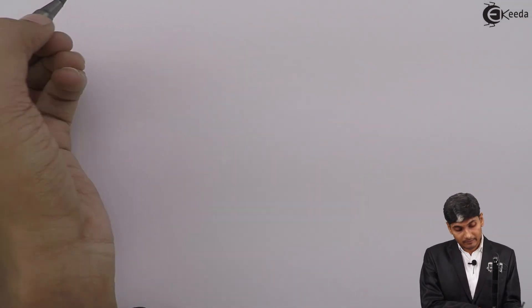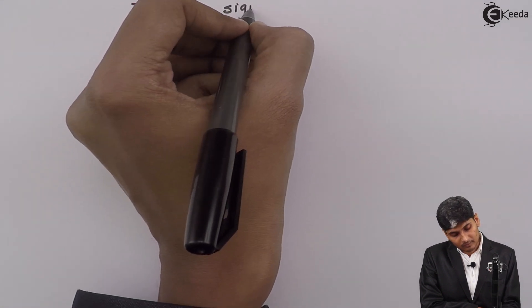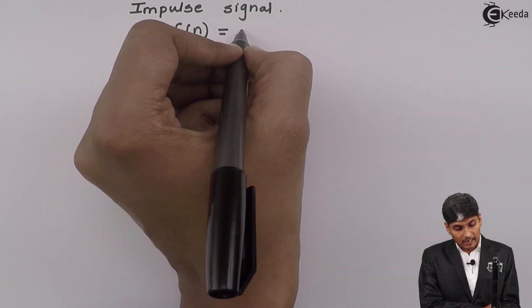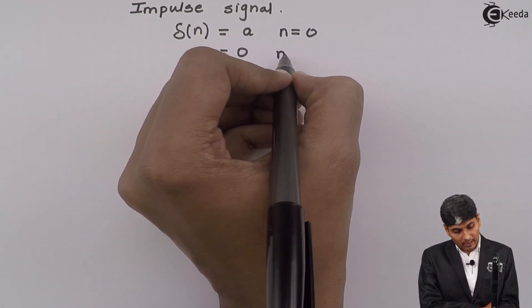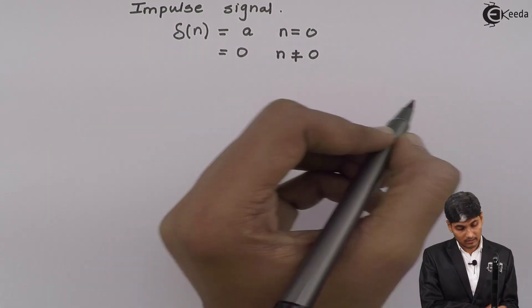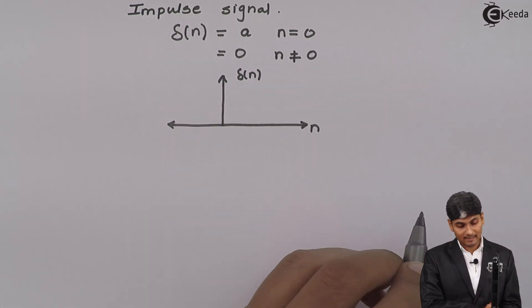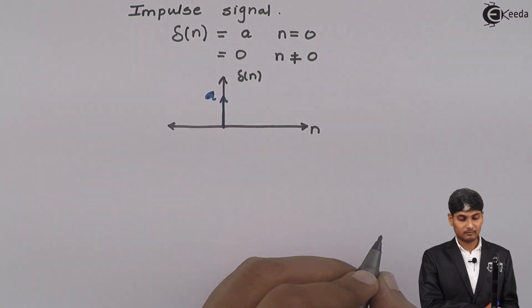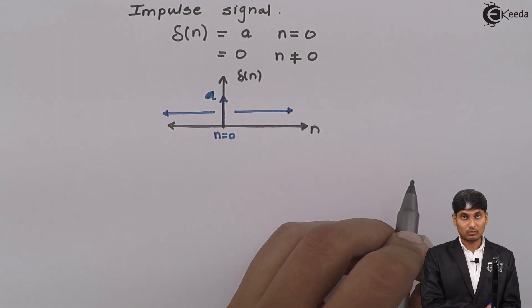Let us continue the discussion on various types of discrete signals. The second type is the impulse signal. An impulse signal is given as delta of n, because we are looking at the discrete impulse. This signal exists at n equal to 0 alone and is equal to 0 for n not equal to 0. Drawing the signal: n on the x-axis, delta of n on the y-axis. At n equal to 0, the signal exists with amplitude a, and everywhere else the amplitude is 0.